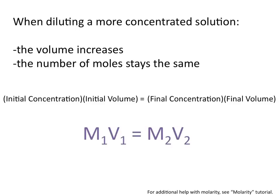Sometimes you see this written as M1 times V1 equals M2 times V2, where M1 times V1 equals the molarity of the first solution times its volume, which equals M2 times V2, which is the molarity of the second solution times its volume. It's just another way of writing initial and final.